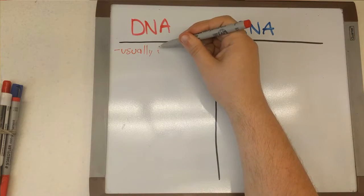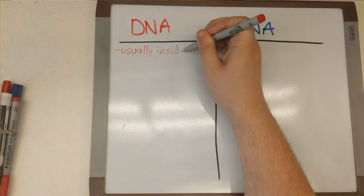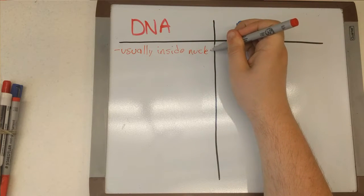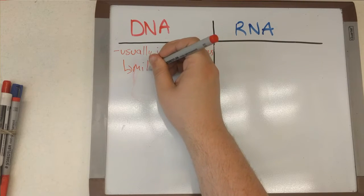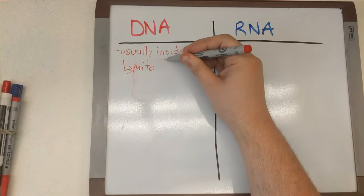So first of all, we usually find DNA in the nucleus, but we do also find it inside the mitochondria and also the chloroplasts, so these are organelles inside cells.